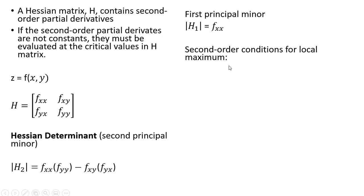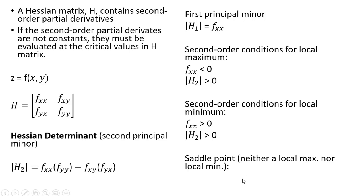And now the second order conditions for a local maximum, the following must be true. The second order conditions for a local minimum, you want to see these signs. And for a saddle point where we have neither a local maximum nor a local minimum, the second principal minor is going to be negative.